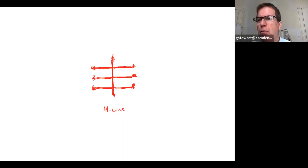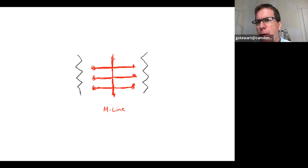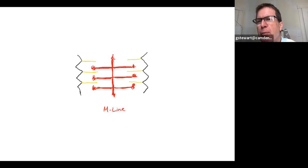Then there's a structural protein called the Z-disc, and you can see why it's called the Z-disc because it has that zigzag pattern. Those are what anchor the actin molecules, which I'm putting in yellow. So these Z-discs are structural proteins that anchor those actin molecules. We have actin in yellow and myosin in red. There is a third contractile protein called titin, which I'll put in blue. That helps anchor the end of the myosin filaments to that Z-disc as well.